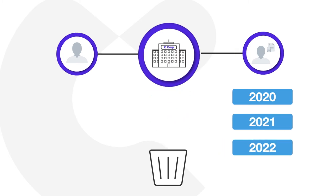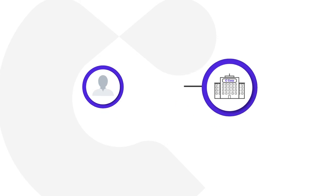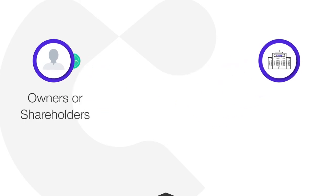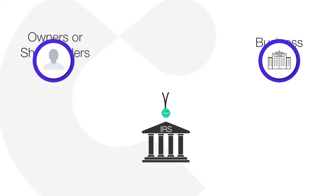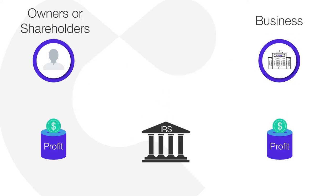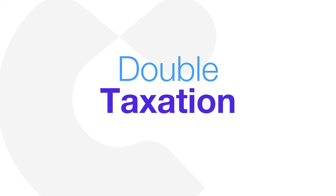Take, for example, business owners who have C-corporations. This is an entity type where owners or shareholders are taxed separately from the business itself. Practically speaking, this results in taxing of profits at both corporate and personal levels, creating a situation of double taxation.